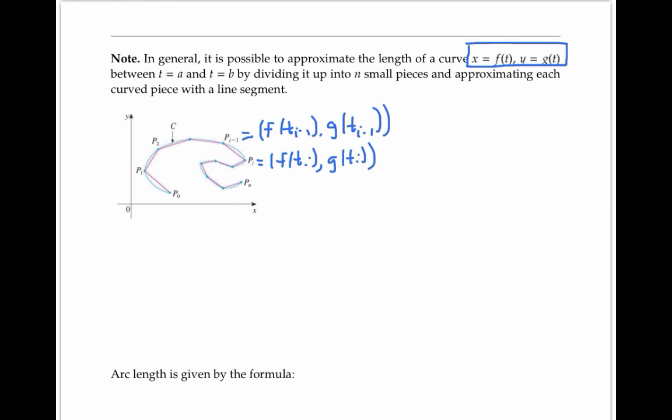Now the distance formula tells us that the length of the line segment from p sub i minus one to p sub i is going to be given by the square root of x two minus x one squared, that's f of t sub i minus f of t sub i minus one squared, plus y two minus y one, that's g of t sub i minus g of t sub i minus one squared.